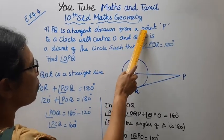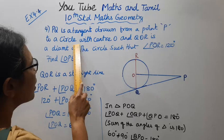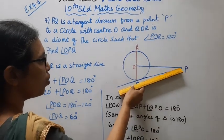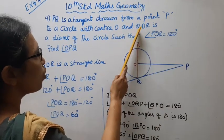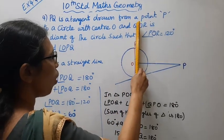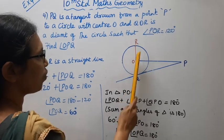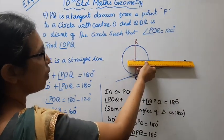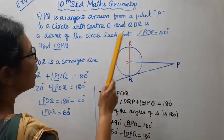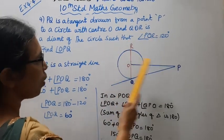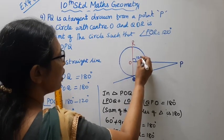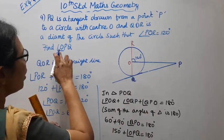PQ is a tangent drawn from a point P to a circle with center O. QOR is a diameter of the circle. OP is a straight line. PQ is a tangent and QOR is a diameter, such that angle POR is 120 degrees. We need to find angle OPQ.